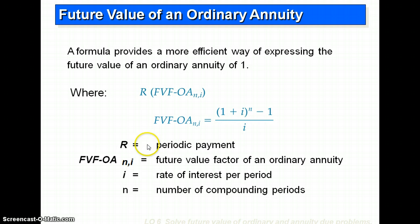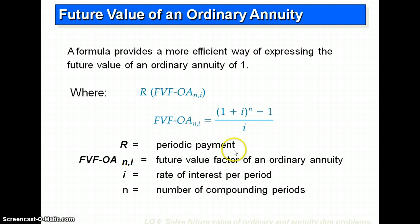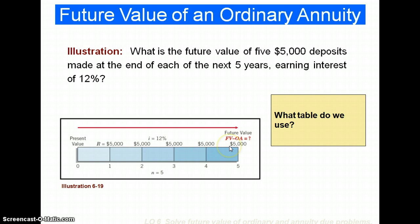There are four pieces of information that are variables when it comes to annuities. Usually we have three of these and we solve for the fourth. So if we want to know the future value of the annuity and we know the payment, the interest rate, and the number of periods, we can calculate the future value. We're going to see an example of that. The formula can be solved using tables, mathematically, or using a financial calculator.